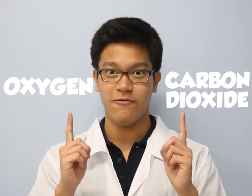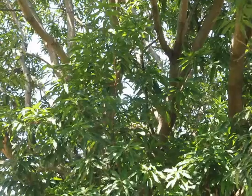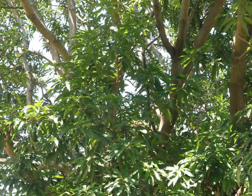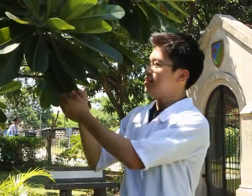Animals also breathe out air that they don't need: carbon dioxide gas. This is a gas that contains the carbon element, and both of these gases are found in the Earth's atmosphere. Most of the oxygen in the air comes from plants, whether it's plants on land or underwater. They all give out oxygen from their leaves in a process called photosynthesis.